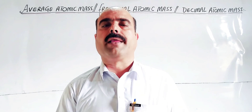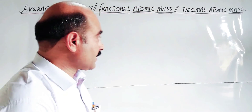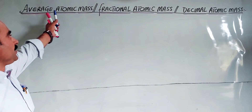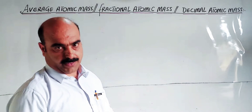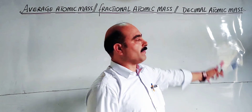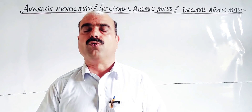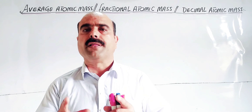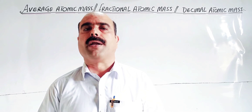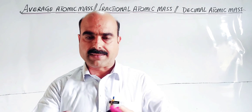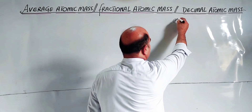The topic is: what is average atomic mass, or what is fractional atomic mass, or what is decimal atomic mass? Students, the elements' relative atomic masses in the periodic table — for example, chlorine's relative atomic mass is 35.5 AMU, which has a decimal value.